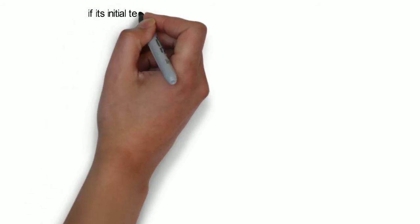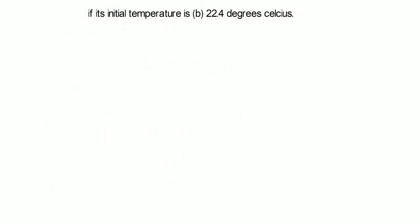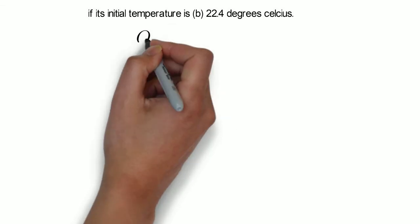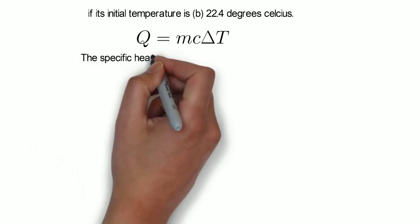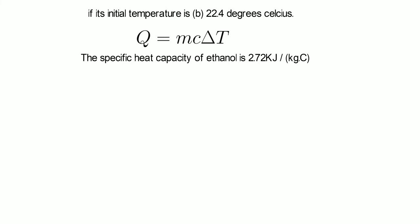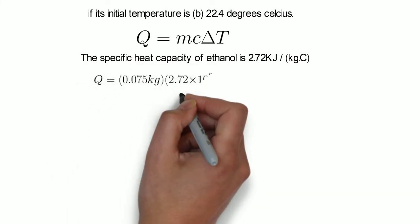Part 2 has the temperature initially at 22.4 degrees Celsius. So we first need to figure out how much heat is required to move it from that temperature up to the temperature at which it vaporizes. We're given the specific heat capacity for ethanol.